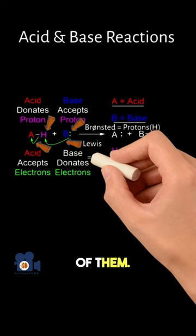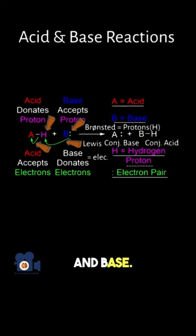In these acid and base reactions, there is always a conjugate acid and base. The easiest way to remember how to identify them is the original acid turns into the conjugate base, and the original base turns into the conjugate acid.